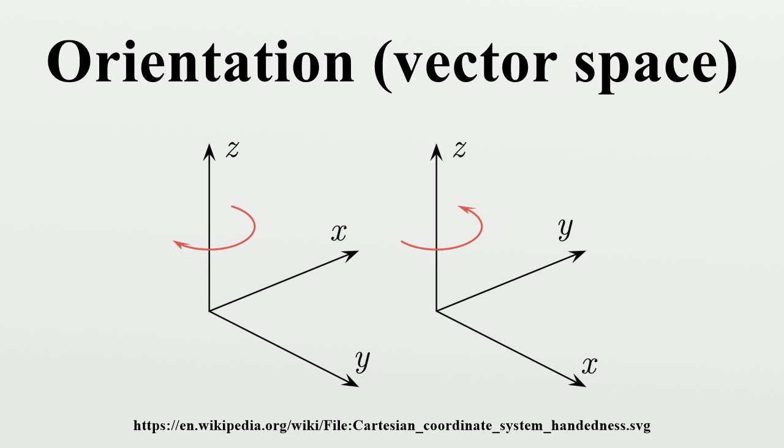In linear algebra, the notion of orientation makes sense in arbitrary finite dimension. In this setting, the orientation of an ordered basis is a kind of asymmetry that makes a reflection impossible to replicate by means of a simple rotation.